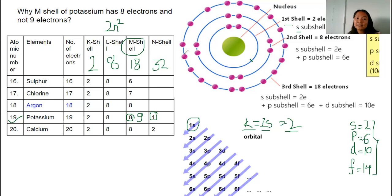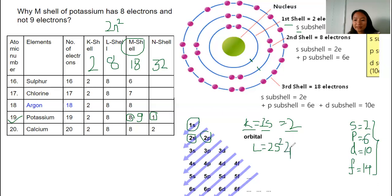Now let us look at the second shell, the L-shell. The L-shell has two sub-shells: 2S and 2P. The 2S sub-shell can hold two electrons and 2P can hold six electrons. So in total, the L-shell holds 2 plus 6 equals eight electrons.